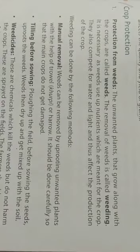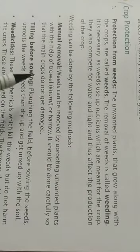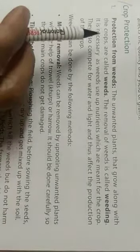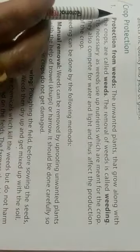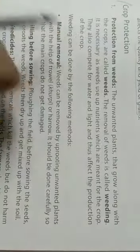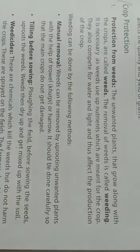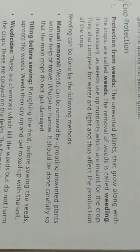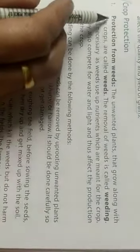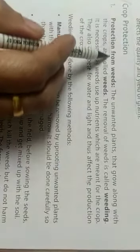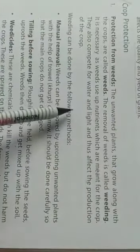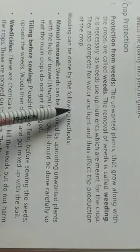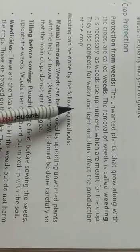Good morning students. We are studying chapter number nine: crop production and its management. Today we will discuss crop protection — how can we protect the crop. First: protection from weeds. The unwanted plants that grow along with the crops are called weeds.